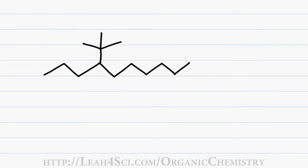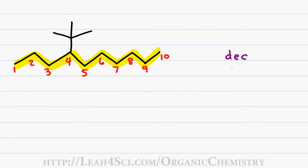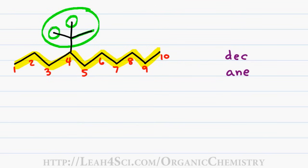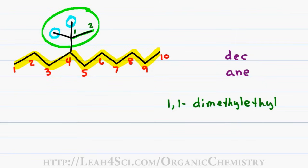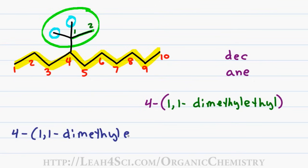We'll use this method on one more example and then I'll show you a shortcut. Highlighting our longest carbon chain, we have a total of 10 carbons. I number from the left because I hit my substituent at carbon 4. Ten carbons gives a first name of 'Dec' and only single bonds gives 'ane.' This substituent is exciting because in addition to a parent chain of 2 carbons, we have 2 substituents coming off it. The substituent parent chain of 2 carbons gives ethyl, with 2 methyl groups on carbon 1 named 1,1-dimethyl. Since it comes off carbon 4, the final name is 4-(1,1-dimethylethyl)decane.